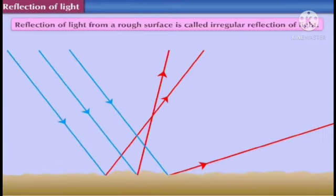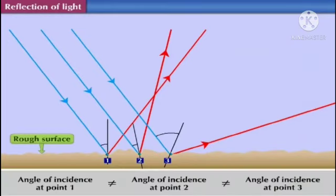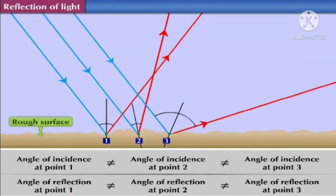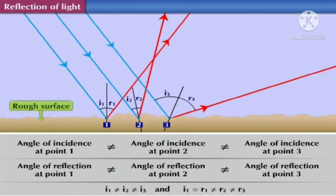Reflection of light from a rough surface is called irregular reflection of light. For rough surfaces, angles of incidence at different points are different. So we can conclude that I1 is not equal to I2, not equal to I3, and I1 is equal to R1 but not equal to R2, not equal to R3.